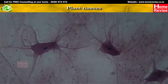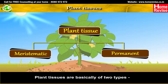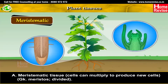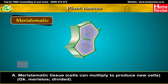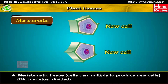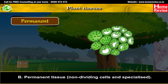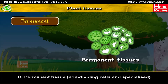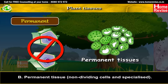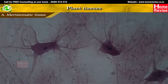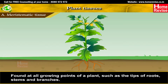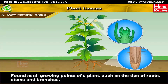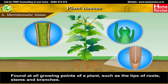Plant tissues are basically of two types: meristematic tissue, whose cells can multiply to produce new cells — the Greek word 'meristos' means divided — and permanent tissue, consisting of non-dividing specialized cells. Meristematic tissue is found at all growing points of a plant, such as the tips of roots, stems and branches, as seen in the figure.